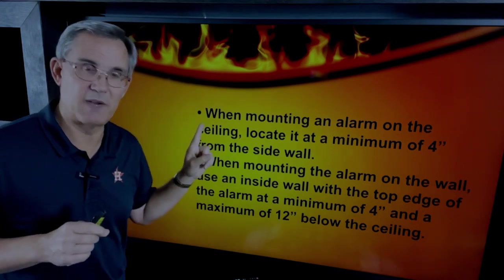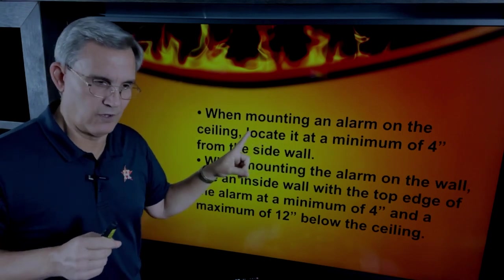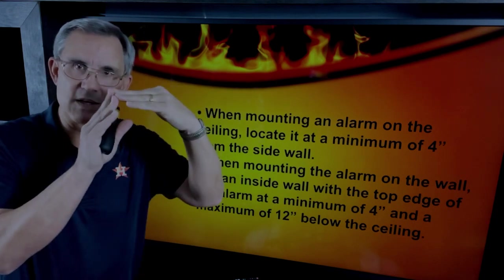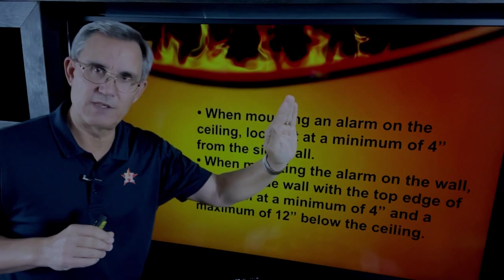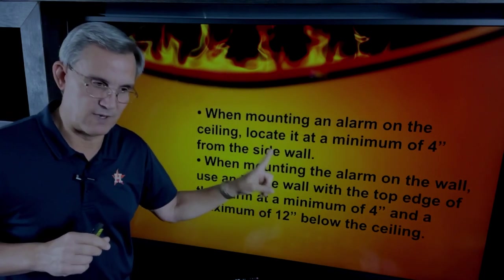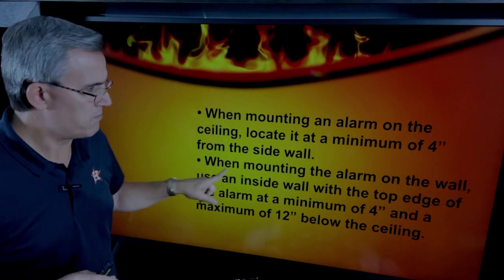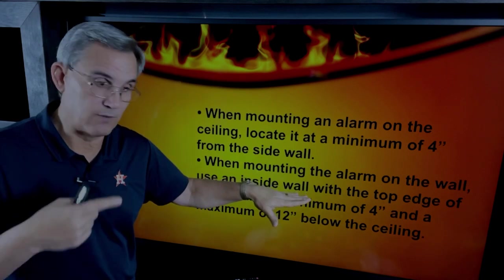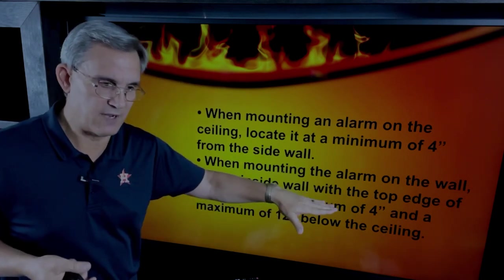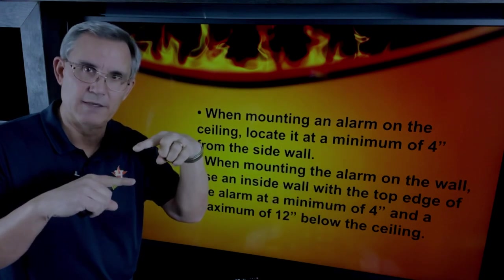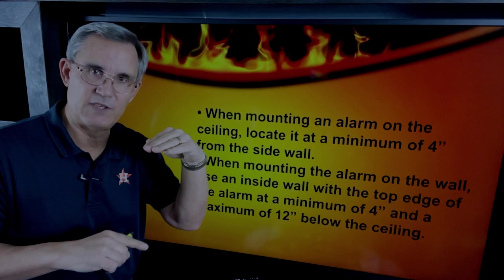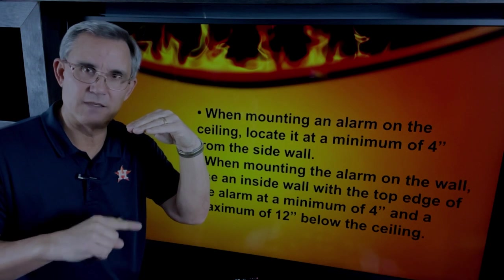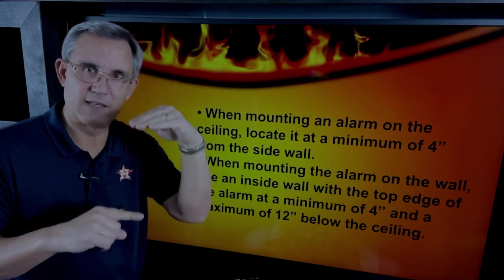I've seen this written up on inspections because it says when mounting an alarm on the ceiling, locate at least four inches from the side wall. You can't jam these things right up into the corner of the wall and the ceiling. You've got to have at least four inches away from the wall. Then it goes on: when mounting the alarm on the wall, use an inside wall, never an outside wall where the insulation is. The top edge of the alarm shall be at least four inches below the ceiling and not more than 12 inches below the ceiling.